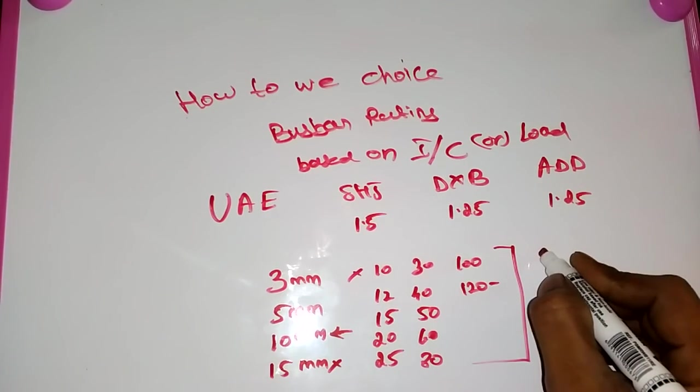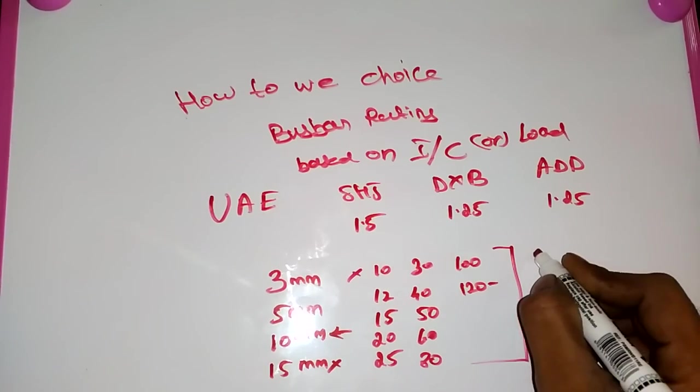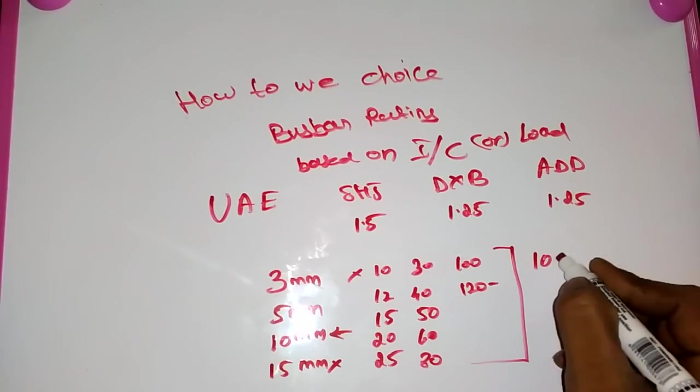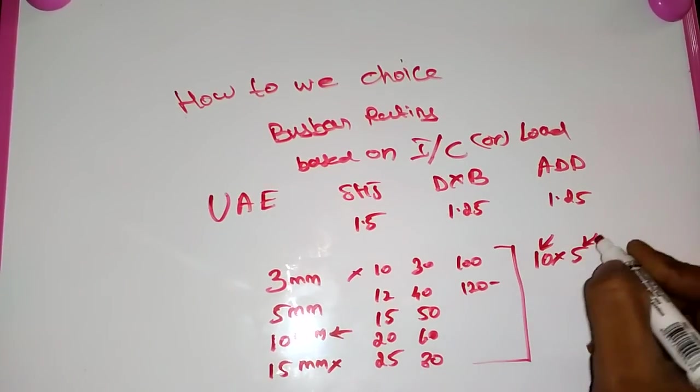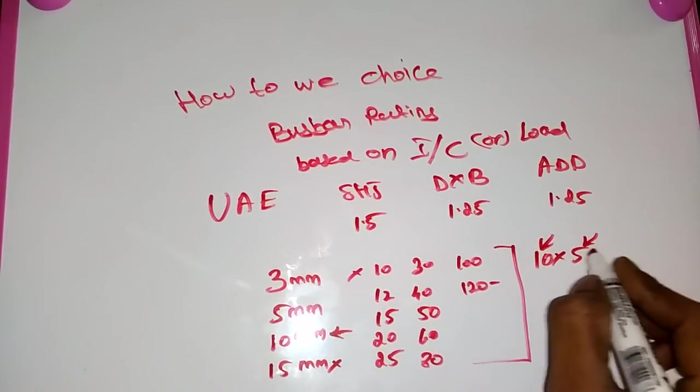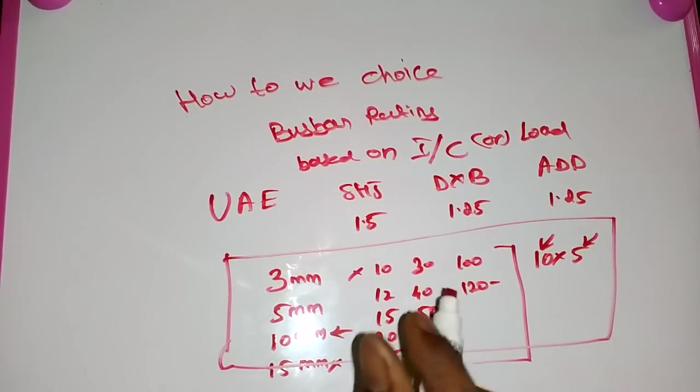First thickness, that means 10 by 5, that means 5 thickness, 10 width. This is the busbar rating we use for the busbar.